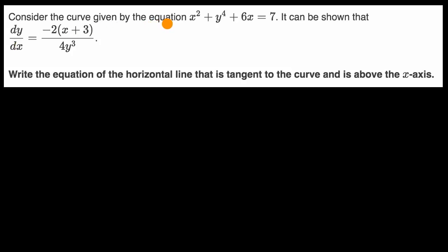We're told to consider the curve given by the equation. They give this equation. It can be shown that the derivative of y with respect to x is equal to this expression, and you could figure that out with just some implicit differentiation and then solving for the derivative of y with respect to x. We've done that in other videos. Write the equation of the horizontal line that is tangent to the curve and is above the x-axis.